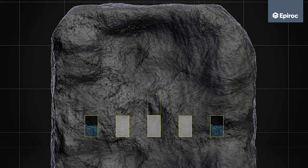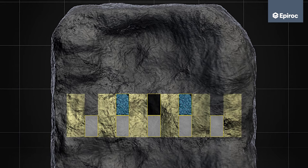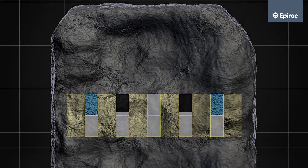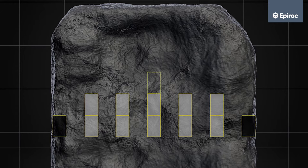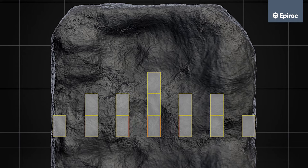The secondary stopes are left as pillars until the adjacent primary stopes have been mined and backfilled. Stabilized fill in the primary stopes prevents sidewalls from caving in when secondary stopes are mined.